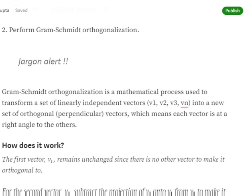Now we'll be performing Gram-Schmidt orthogonalization. This is a big jargon and I think even I'm not able to pronounce it, but really learning how to implement this orthogonalization. Basically, it is a mathematical process used for transforming a set of linearly independent vectors, basically the columns of a matrix, into a new set of orthogonal perpendicular vectors, which means each vector is at a right angle to each other.